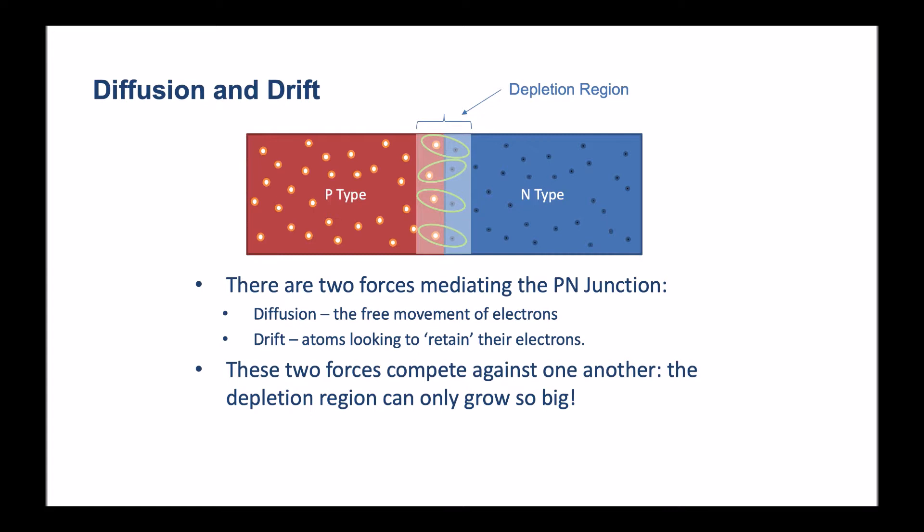And these two forces compete against one another. Diffusion is encouraging the electrons to move around, to vibrate, to form new structures, whereas drift is encouraging the electrons to remain where they are. So these two forces compete against one another.